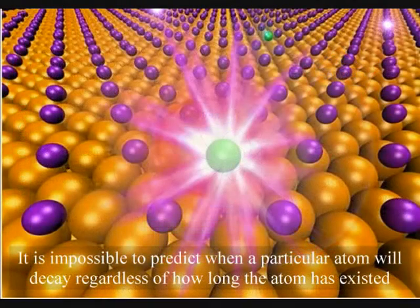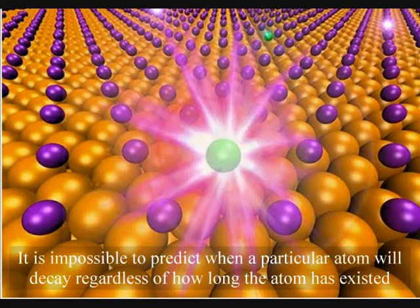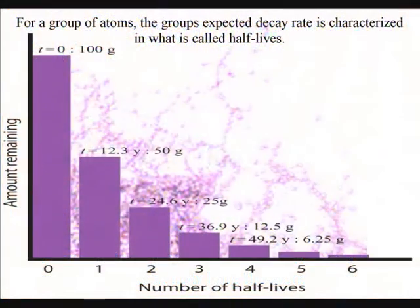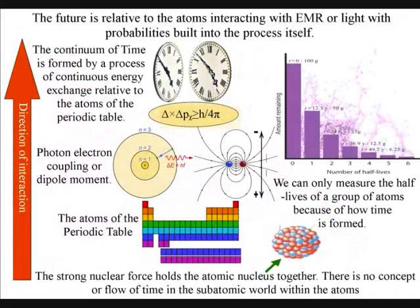It is impossible to predict when a particular atom will decay regardless of how long the atom has existed. However, for a group of atoms, the group expected decay rate is characterized in what is called half-lifes. The half-life represents a time after which half of the group's nuclei will have decayed. Mainstream physics has no objective or logical understanding of why we should have such a property as half-life when we are dealing with decaying atoms.